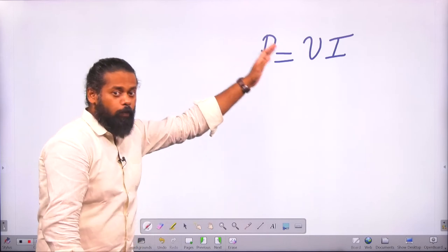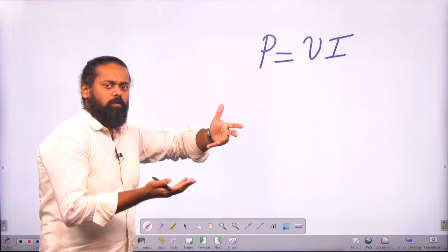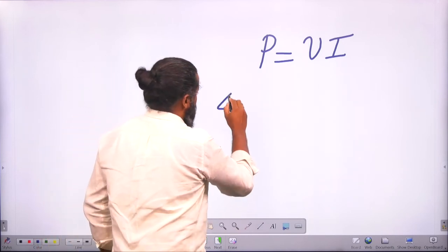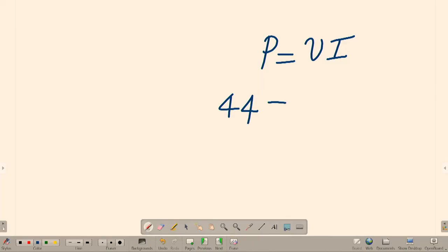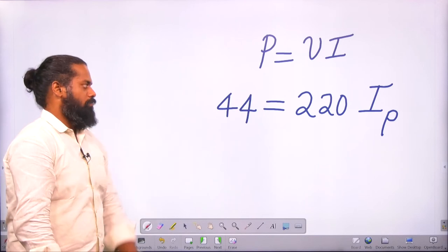So if output, in the secondary, if the consumption is 44 watts, then input also should be 44 watts. The current will be varying accordingly. So 44 watts is the power. Input voltage is 220 volt. Corresponding to that in the primary, current will be there.